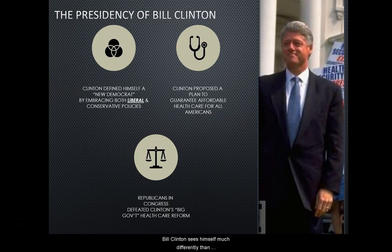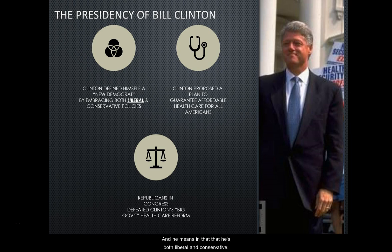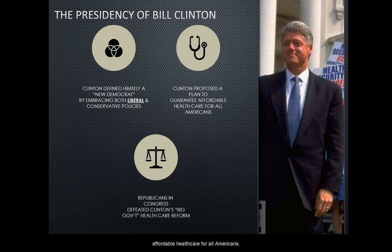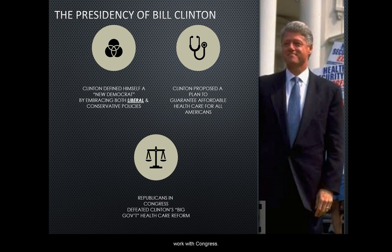Bill Clinton sees himself much differently than previous presidents. He calls himself a new Democrat, meaning that he's both liberal and conservative — more of a middle-of-the-road president. Under his liberal side, Clinton proposes a plan to guarantee affordable health care for all Americans. But as president, in order to get bills passed, he has to work with Congress.